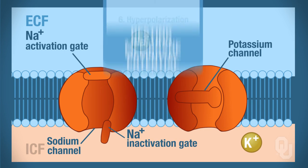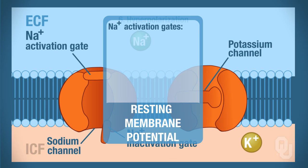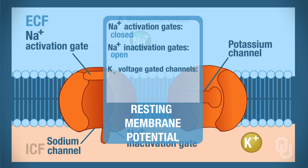The cell returns to rest using the sodium-potassium pump and leak channels to restore ion distributions. At rest: the voltage-gated sodium activation gate is closed, the inactivation gate is open, and the voltage-gated potassium channels are closed. That is the end of the action potential for this neuron — it responded to a stimulus, and now the stimulus is gone, so it has stopped responding.